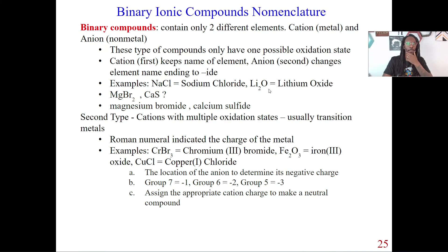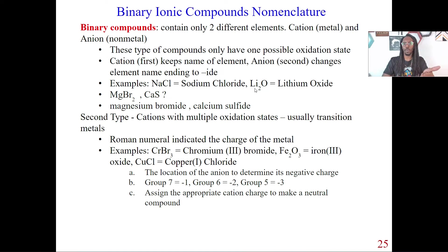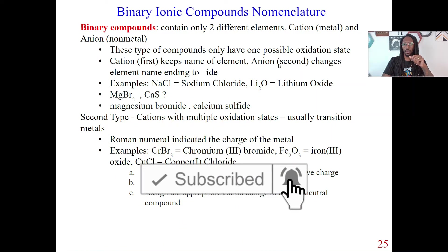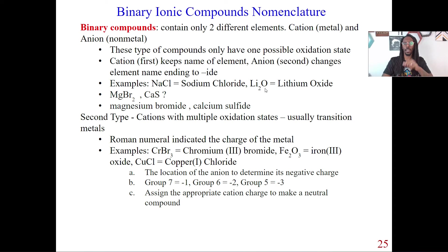Let's look at one more ionic compound. Ionic compounds have cations and anions. Lithium is a metal and oxygen is a non-metal, so this is an ionic compound. We start with the cation — lithium — which stays the same. The anion is second, so we take oxygen and change it to '-ide', giving us 'oxide'. Together this compound is called lithium oxide.